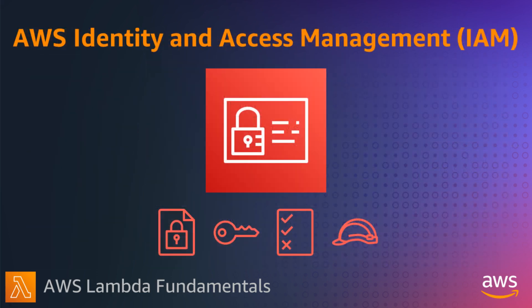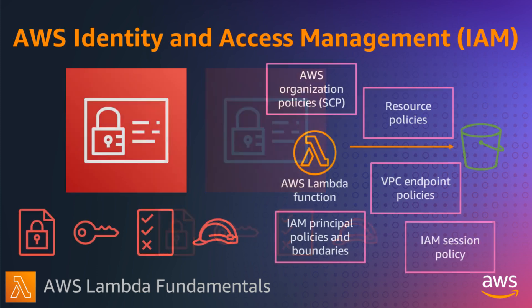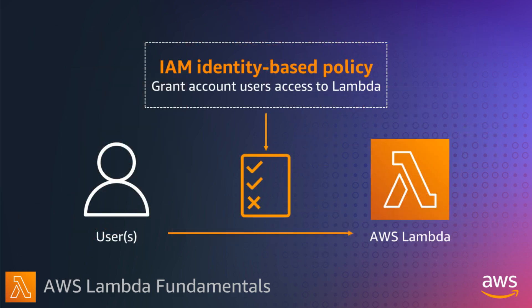There are a number of ways to secure and protect access to Lambda resources using AWS Identity and Access Management, IAM, with a number of policies you can define for fine-grained access control. First of all, you can use IAM identity-based policies to grant users themselves, or groups and roles associated with a user, access to Lambda.